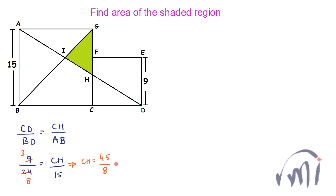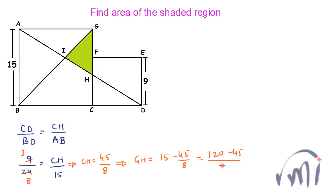Since CH equals 45/8, we get GH equals 15 minus 45/8. That is 120 minus 45 divided by 8, which equals 75/8.